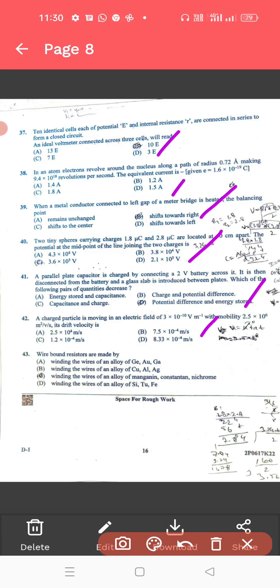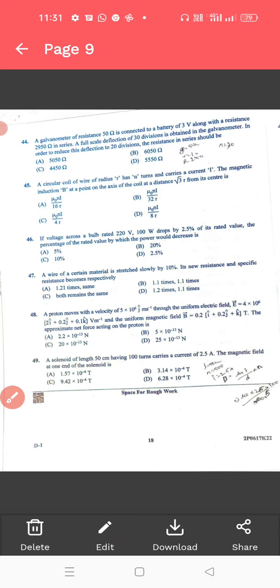43, wire-wound resistors. For 43, it is manganine, that is C is a correct answer. 43. Next, we will move to the next page, last part 1 page.